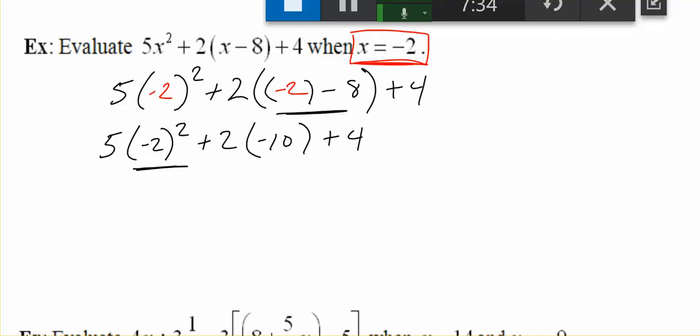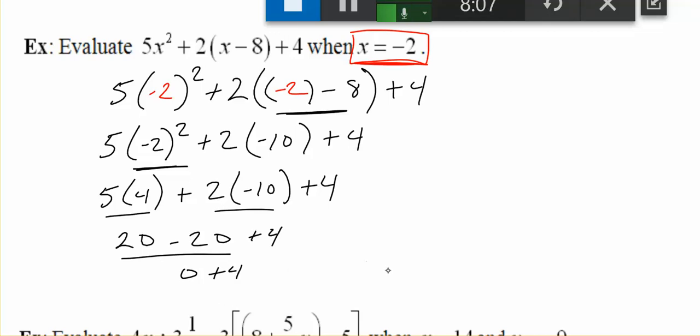Negative 2 squared. Don't get confused here. Negative 2 squared means negative 2 times negative 2, so that's positive 4. 5 times 4, 2 times negative 10 plus 4. Our next step would be to multiply. I've got two sets of multiplications: 5 times 4 makes 20, and 2 times negative 10 makes negative 20. And we add 4. 20 minus 20 makes 0, and 0 plus 4 is 4. So our answer is 4 here.